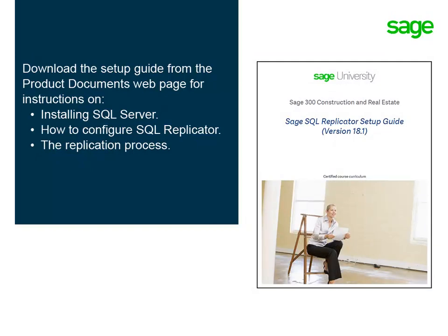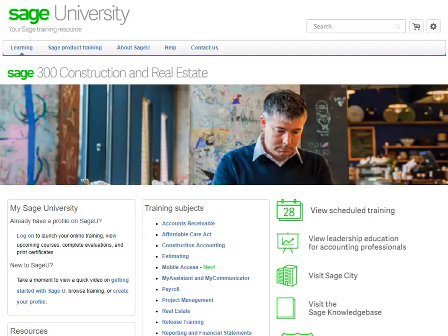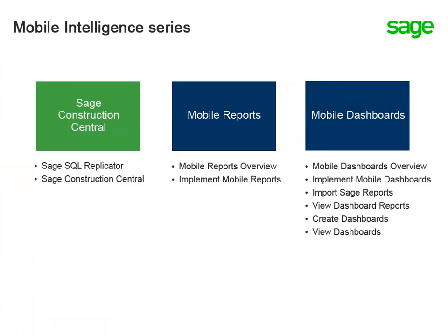We recommend that you download the Sage SQL Replicator Setup Guide for detailed information and step-by-step instructions. Want to learn more about going mobile? Check out Sage University. On the Sage 300 Construction and Real Estate homepage, you'll find a collection of complimentary instructional videos on mobile access. The Mobile Intelligence series covers how to set up your Sage Construction Central website, and how to set up and use mobile reports and mobile dashboards.